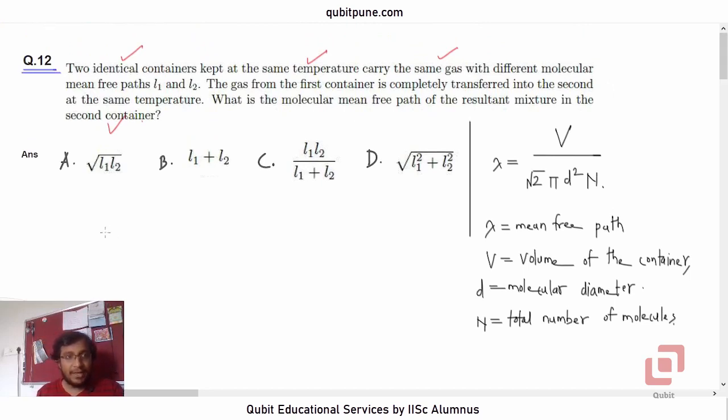Because of identical containers, they have the same volume for both containers, and the gas from the first container is completely being transferred to the second one. So our final system will also have the same volume, same temperature, and the same gas.